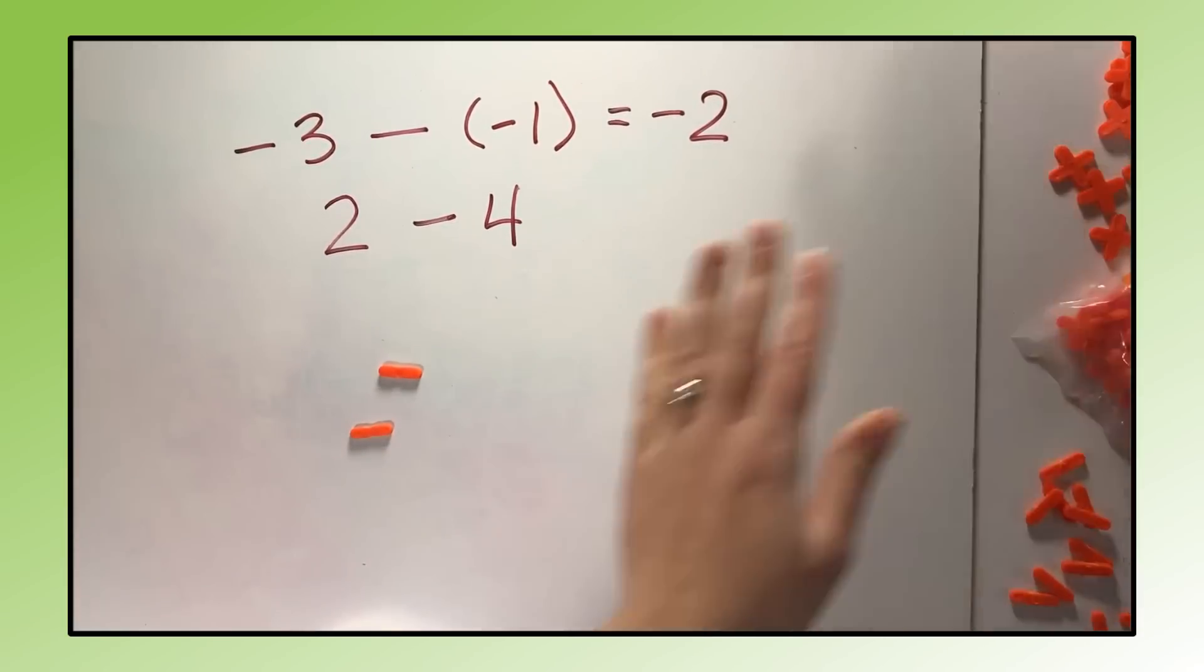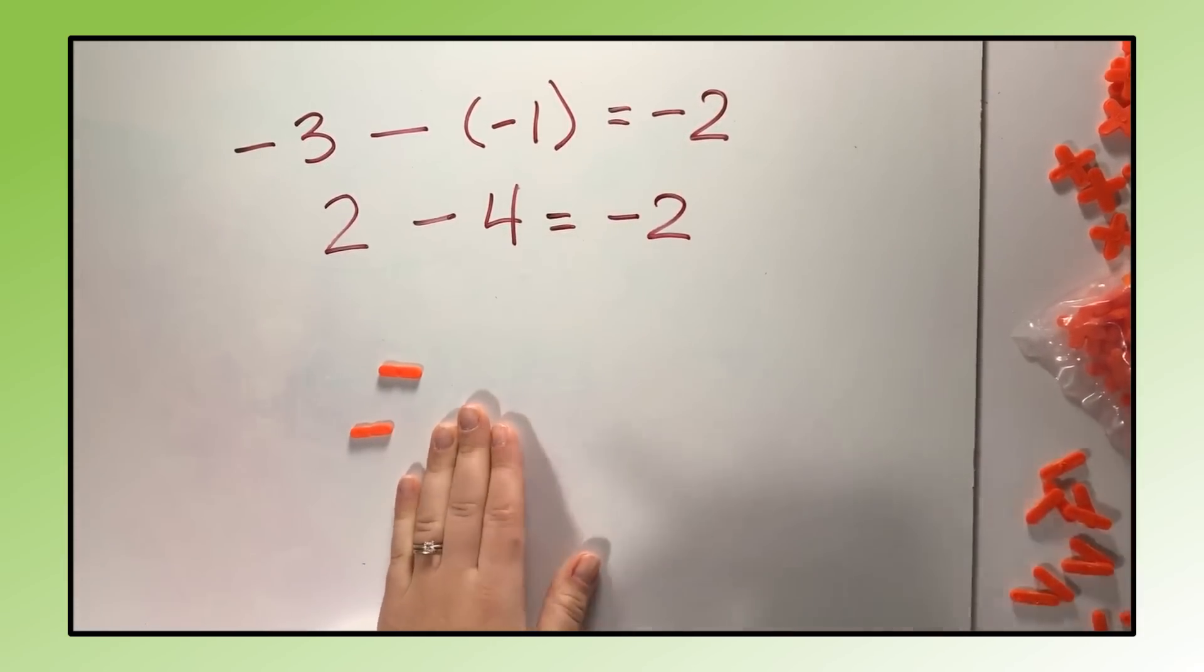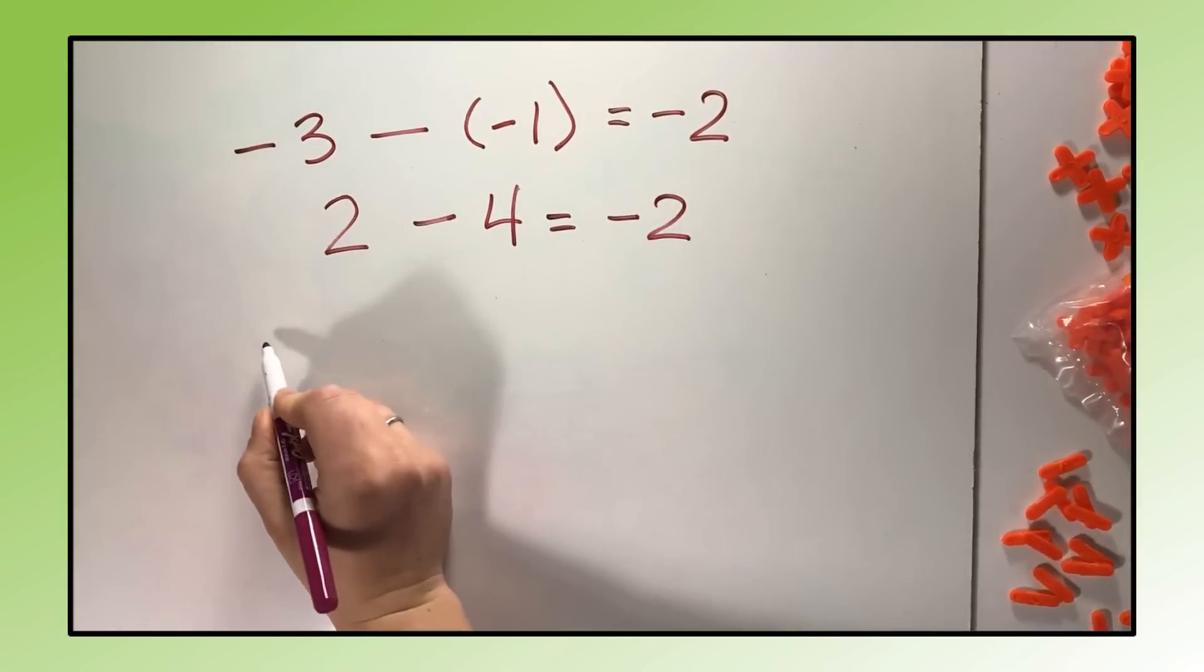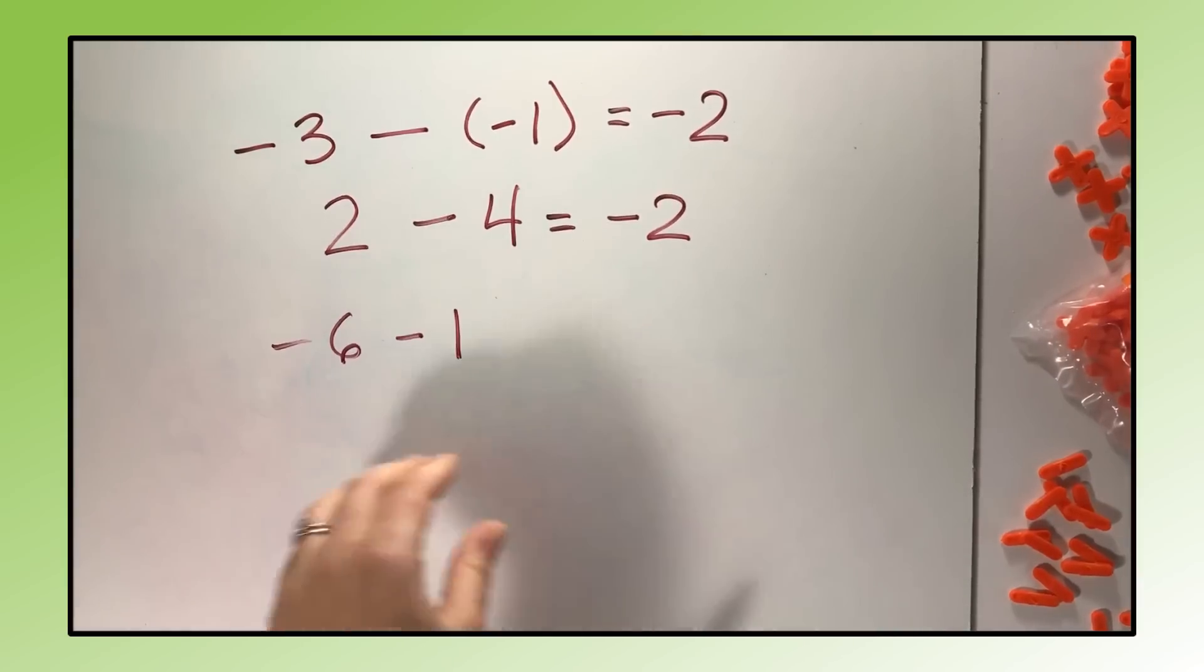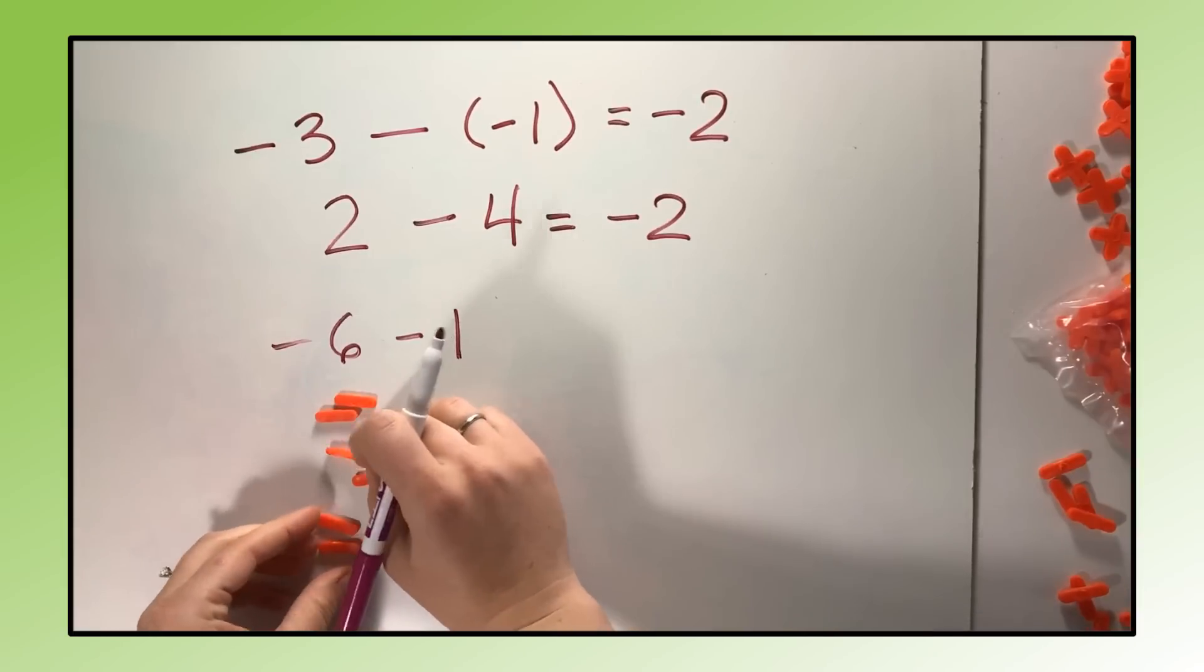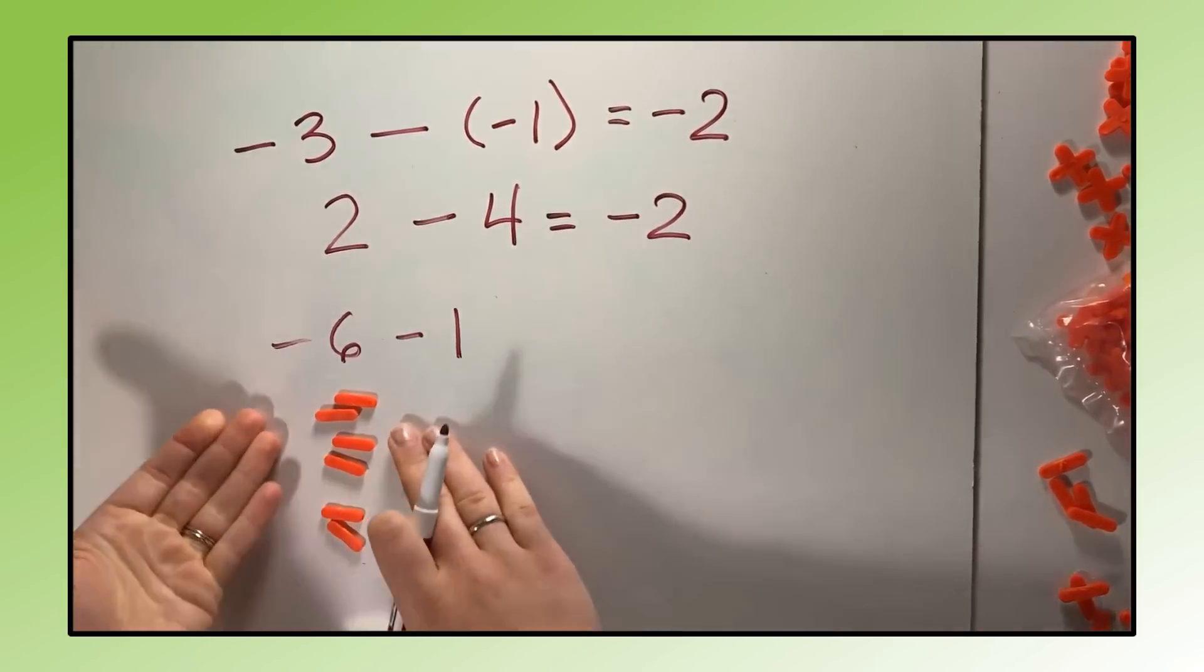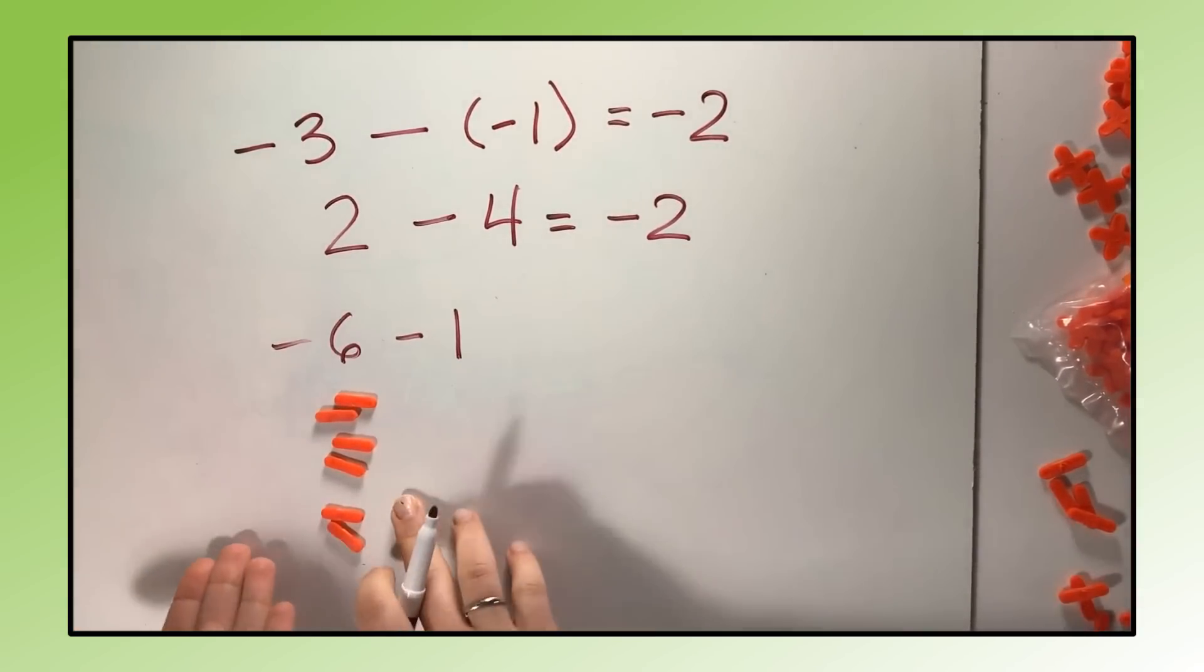Let's try another one that works a little bit differently: negative six minus one. Now we're starting with a negative. The kids will put negative six in for their counters, and then they want to take away a positive one. Well, I don't have any positives here. I can't take away one plus sign because I don't even see one. Well, I can add a plus sign, but remember, I can't just add that because that's changing the problem - I have to add zero.